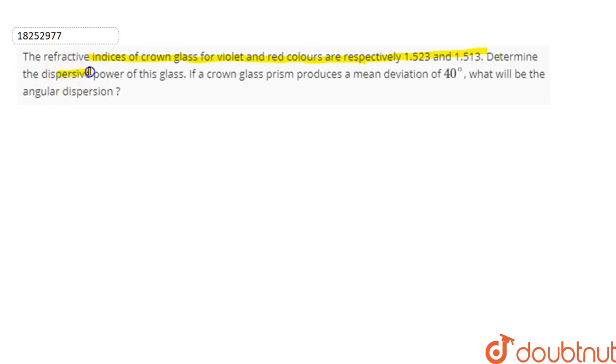In this question, we have refractive indices of crown glass for violet and red colors. Similarly, we have to find dispersive power of this glass. If crown glass produces mean deviation, mean deviation is given by crown glass, and what will be the angular dispersion?